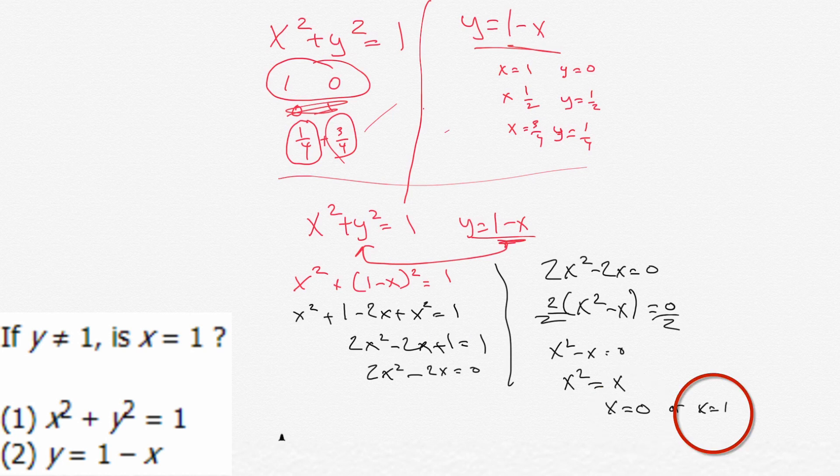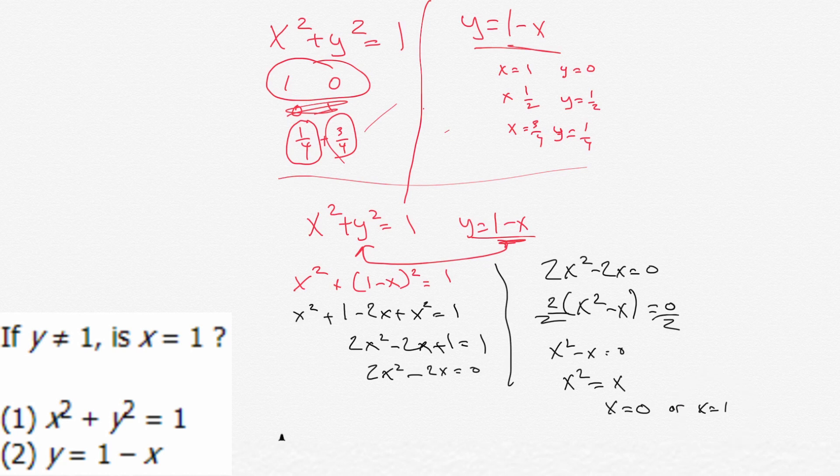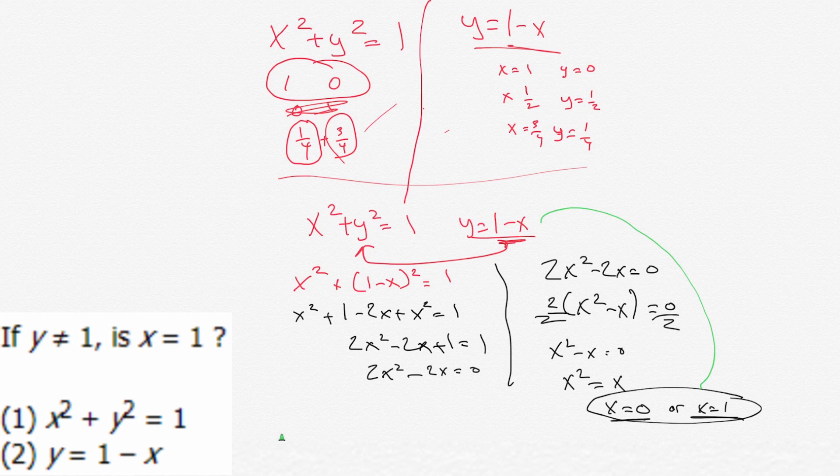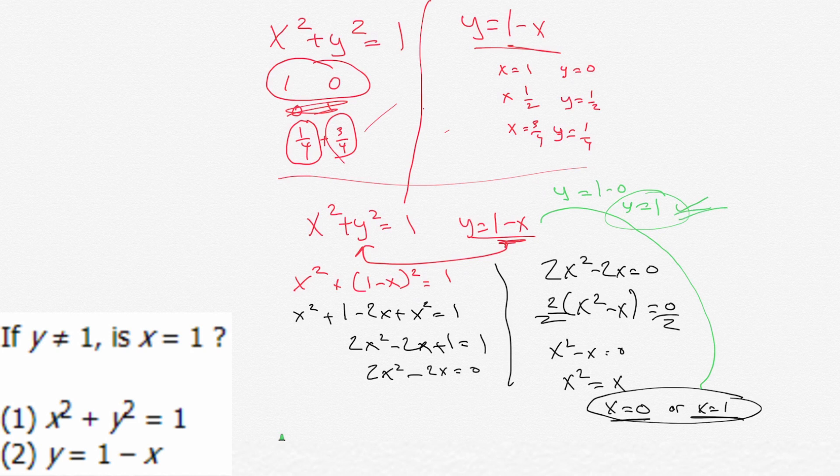So we can't narrow down x, because x could equal zero, or x could equal one. However, if we go back way over here, if x equals zero, then we'd have y equals one minus zero, and then y would equal one, and that is not allowed. That is a no-no, right? Because it said in the very beginning, y cannot equal one. So the bottom line is, we cannot have x equals zero, because then y would equal one.